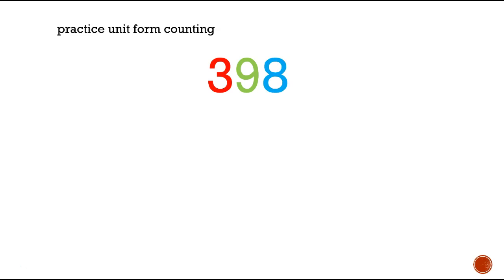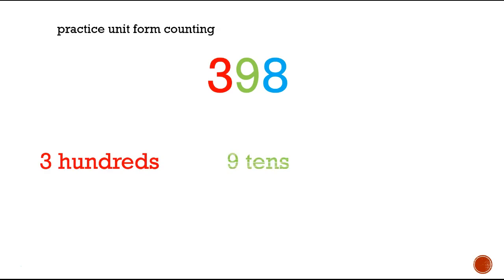Let's try this one. How are we going to write this out in unit form? 398. We're going to write 3 hundreds, 9 tens, 8 ones.